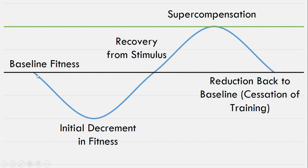Essentially it suggests that an athlete starts with a baseline level of fitness — and that can be any component of fitness — and after a training session we have an initial decrement in fitness, due to a disruption to homeostasis. However, after this initial decrement we have a supercompensation effect in our fitness levels, and we go up to a point above our initial baseline. So we actually improve.